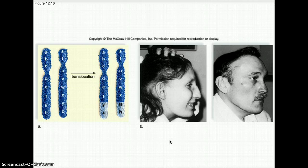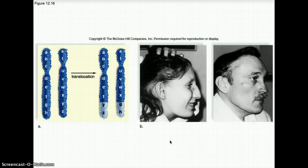Translocation is when chromosomes 2 and 20 exchange segments. This leads to a syndrome with distinct facial features and can sometimes disrupt an allele on chromosome 20.